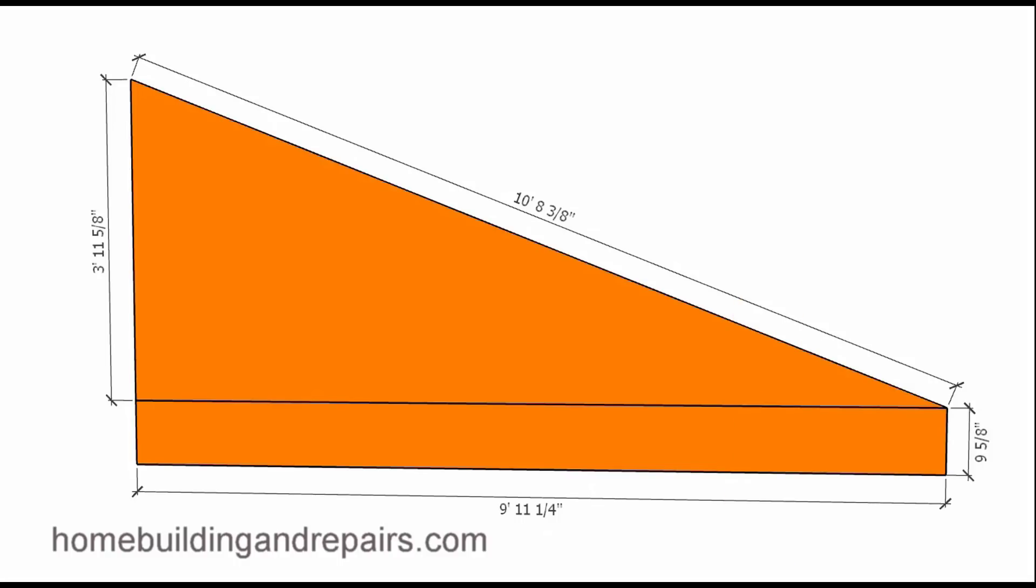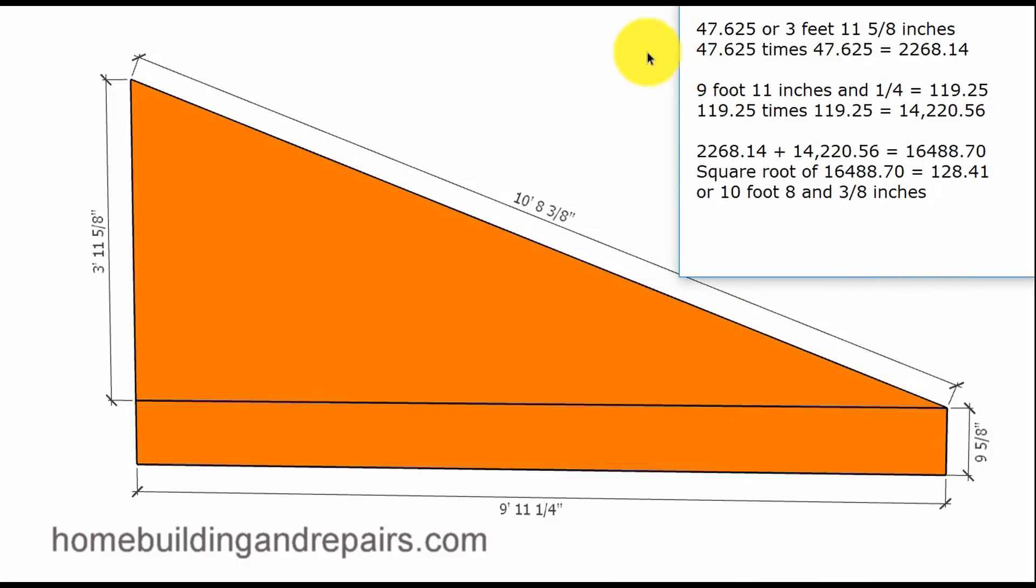So let's go ahead and pull up our sheet here and I am going to just whip right through this. I'm just doing it a second time to give you an idea. If we convert the three foot eleven and five-eighths it will give us this decimal. We multiply it together.